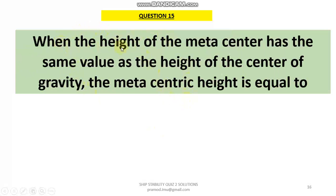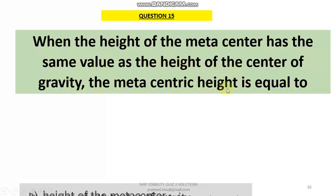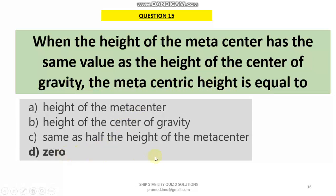Question 15: When the height of the metacentre has the same value as the height of the centre of gravity, the metacentric height is zero and the vessel is said to be in neutral equilibrium. This is a dangerous situation and must be avoided at all costs in the operation of ships.